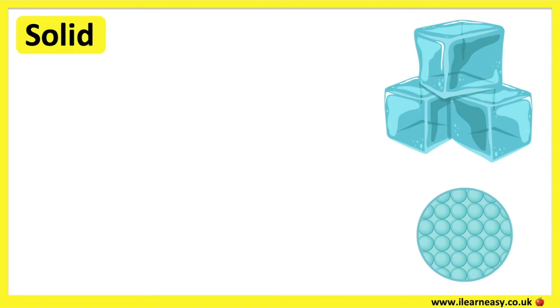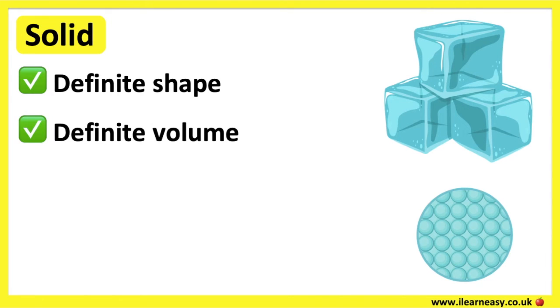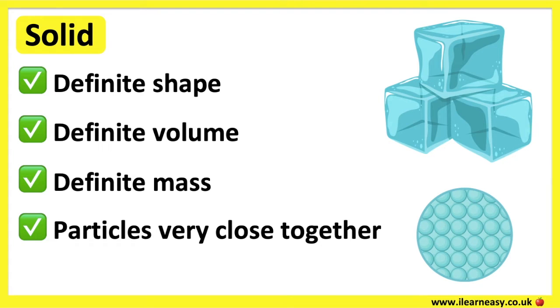Solids have a definite shape, definite volume, and definite mass. This is because the particles in a solid are packed very closely together in a regular pattern. So, the particles in a solid have very low kinetic energy.